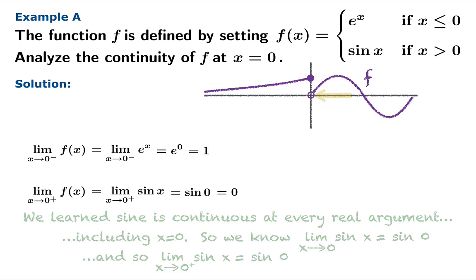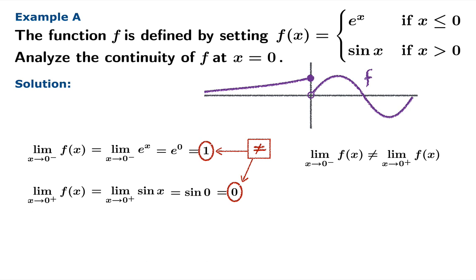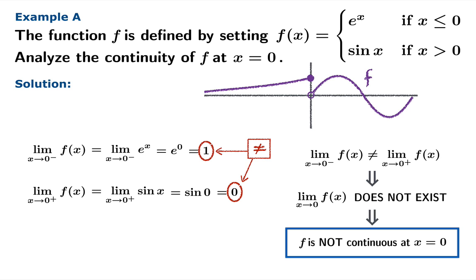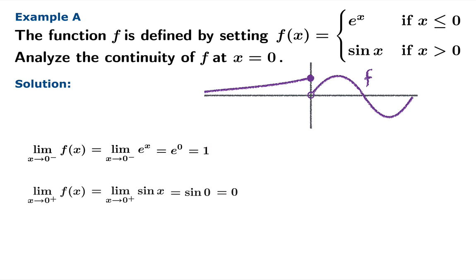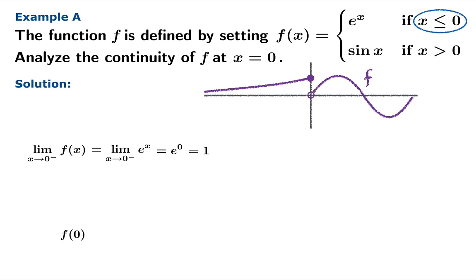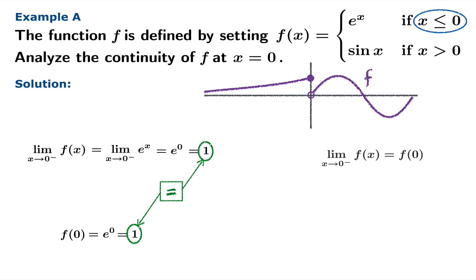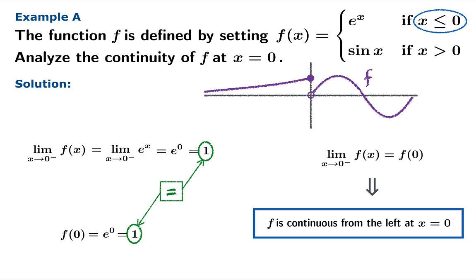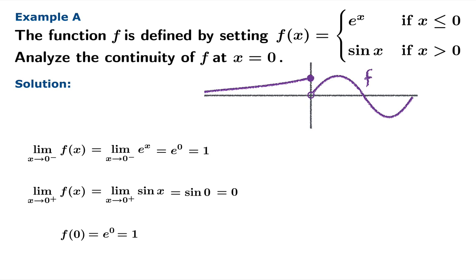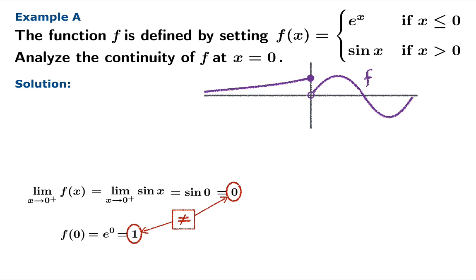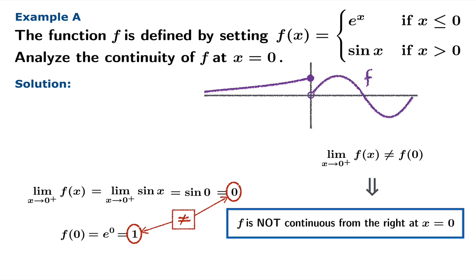So there you have it — the left-hand limit is one and the right-hand limit is zero, and they don't match up. So it's now official: the limit as x approaches zero does not exist, and therefore f cannot possibly be continuous at zero. Now f of zero equals e to the zero which is one, and notice the function value and the left-hand limit match up, meaning the function is continuous from the left at x equals zero. However the function value does not match the limiting value from the right, so f is not continuous from the right at x equals zero.